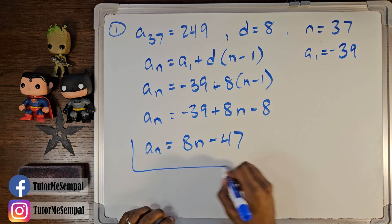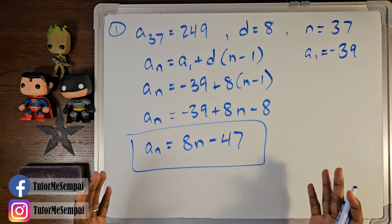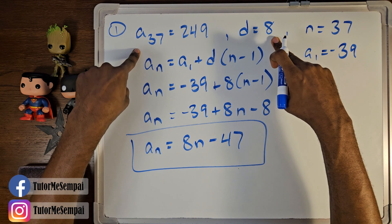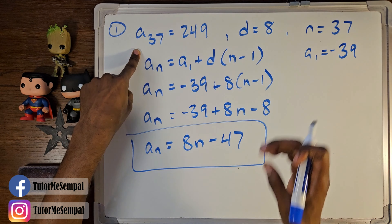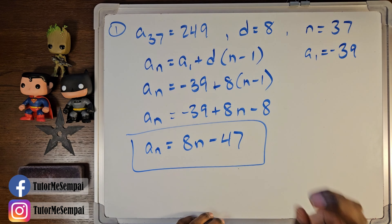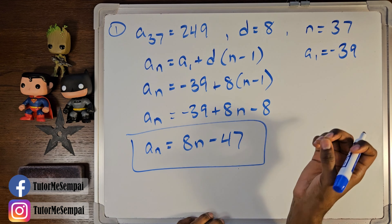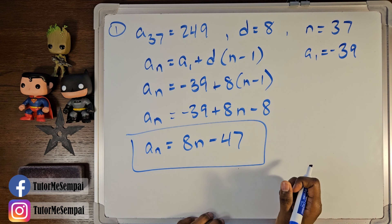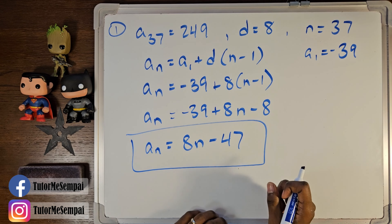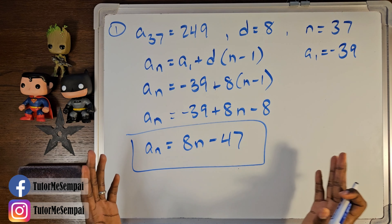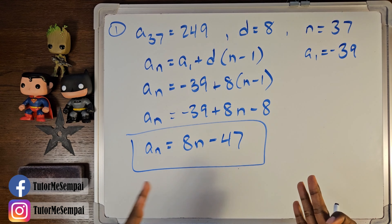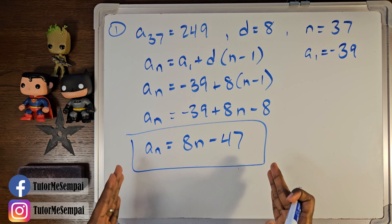This is going to be our final form of our explicit formula. Given only this little bit of information — we only knew an arbitrary term and the d, our difference or distance between any two consecutive terms within the sequence — let's jump into one more example just to make sure we understood all the steps.